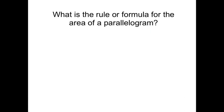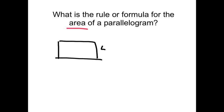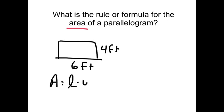Perimeter is easy — that's just adding all the sides to find the distance around a shape. But what is the rule or formula for the area of a parallelogram? We've already reviewed the area of a rectangle. If it was four feet by six feet, the rule is area equals length times width, which would be four times six equals 24 feet squared.